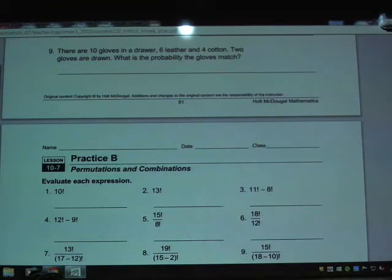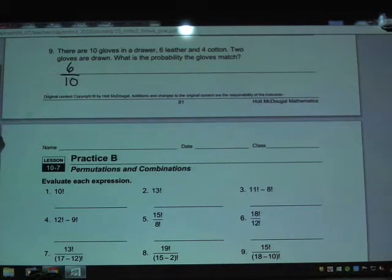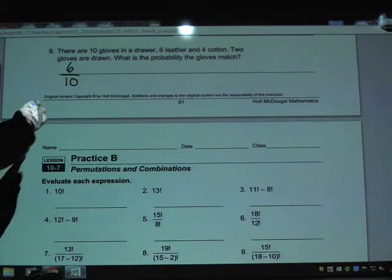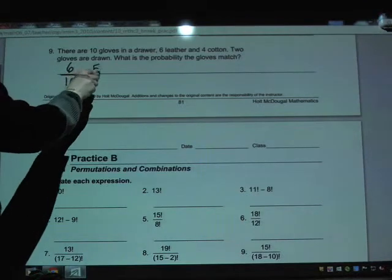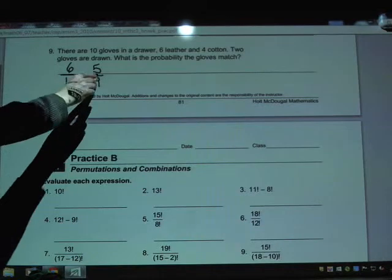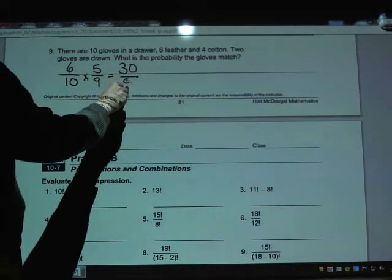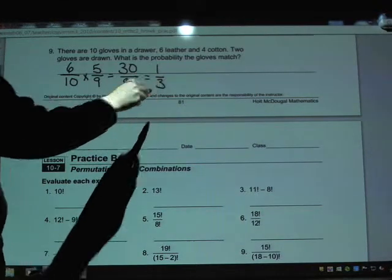The probability of getting a leather the first time is 6 out of 10. Then the probability of getting a leather the next time, there would be 5 leathers left and 9 gloves total. If we multiply those together, that gives us 30 out of 90, or 1 third chance of pulling leather then leather.